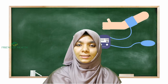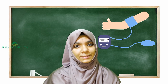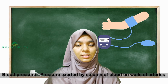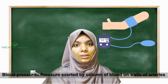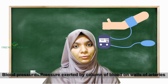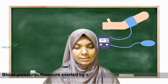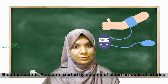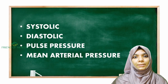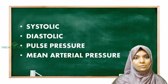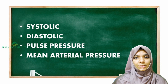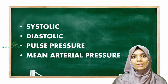First, let us see the definition of blood pressure. Blood pressure is the pressure exerted by the column of blood on the walls of arteries. There are four important components you should know: systolic pressure, diastolic pressure, pulse pressure, and mean arterial pressure.